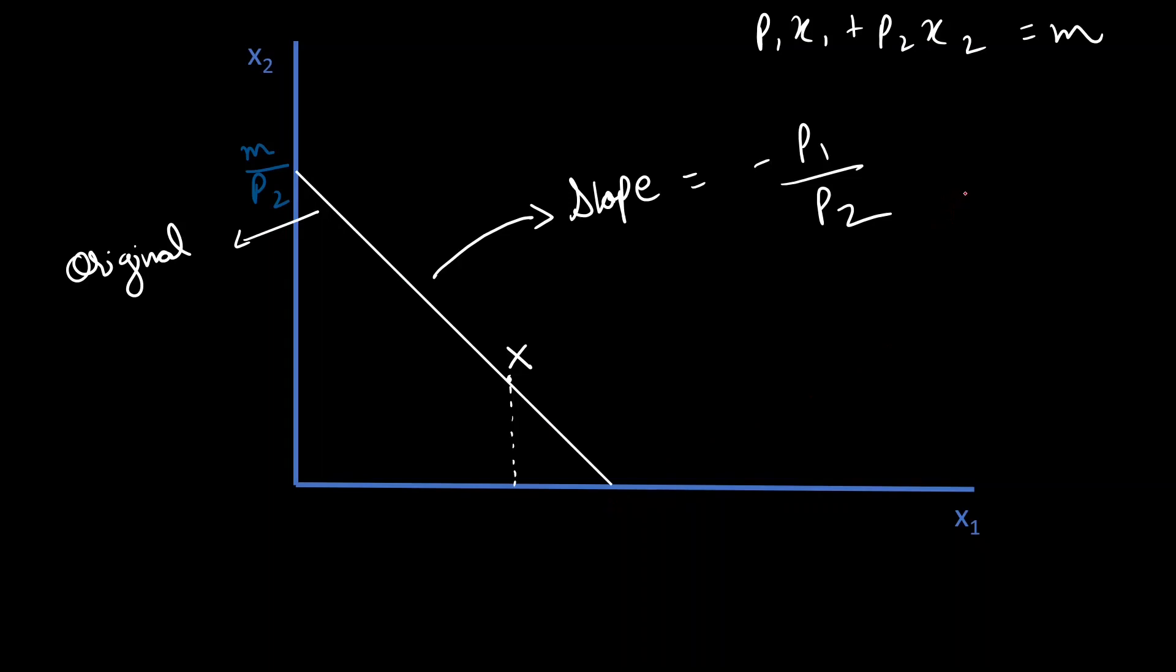Now, let's say the price of good one reduces from P1 to P1 dash. Let's try to model that down in terms of substitution and income effects. So, remember what was the first thing we did with Sam? We reduced his income, so his original bundle was just affordable. So, we can find out how he's substituting between good one and good two.